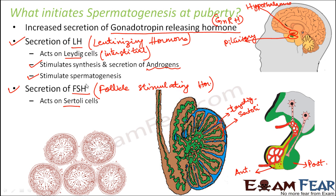When FSH acts on the Sertoli cells, it stimulates the process of spermiogenesis — the transformation of spermatids into sperms — which takes place in the Sertoli cells and requires input from them. So when these hormones act on the Sertoli cells, spermiogenesis is also stimulated. Thus, both spermatogenesis and spermiogenesis start taking place at puberty.